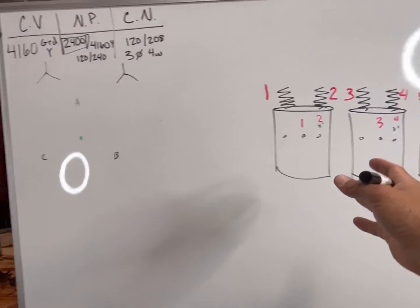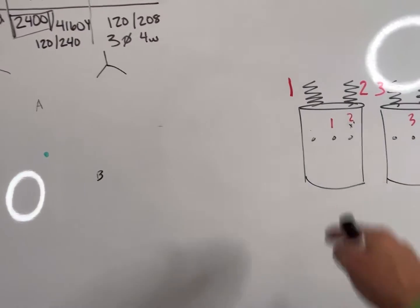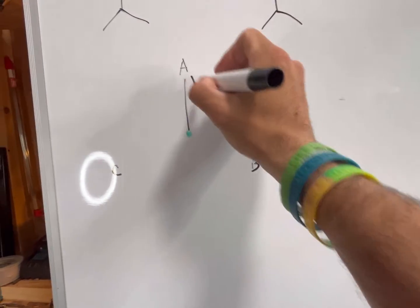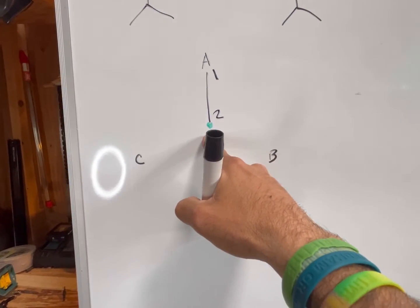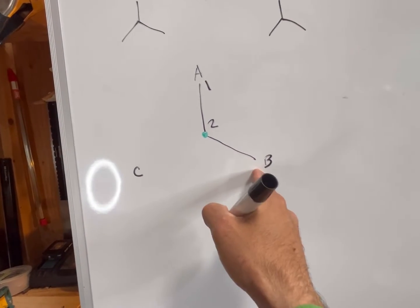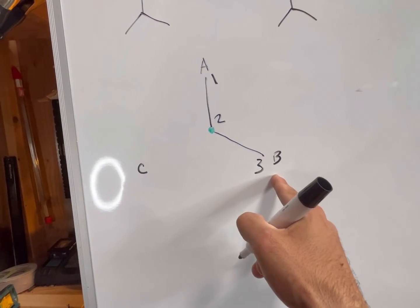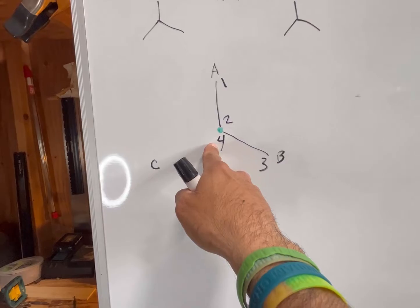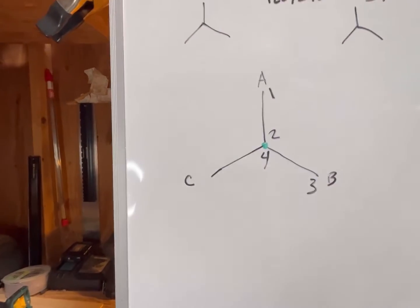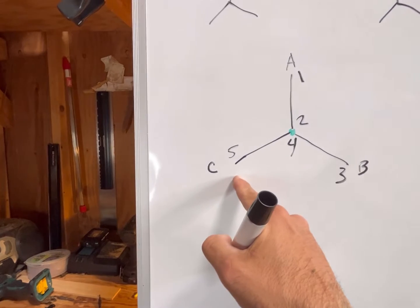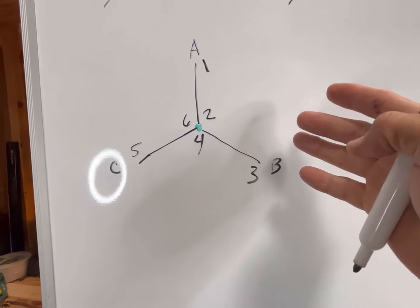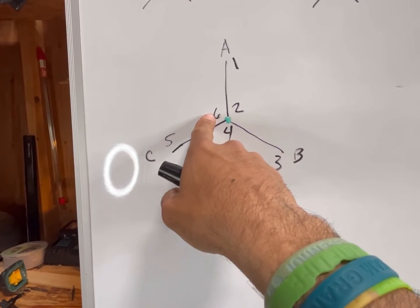Now that the bank is numbered, I can start vectoring. I take my 1-2 coil and throw it between A phase and neutral, with 1 going to A phase and 2 going to neutral. My 3-4 transformer gets fed by B phase — 3 goes to B, 4 goes to the grounded neutral. My 5-6 transformer gets fed by C phase — 5 goes to C phase, 6 goes to the grounded neutral.